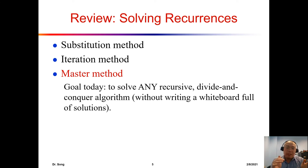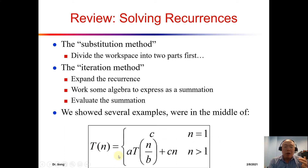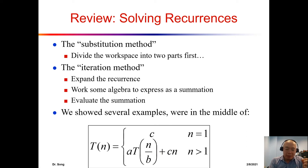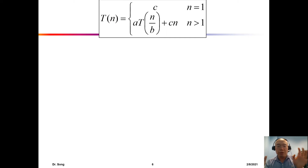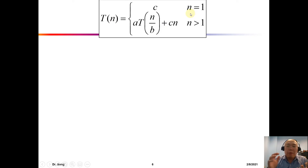Today, when talking about solving recursions, we only discuss divide-and-conquer style: a·T(n/b). For merge sort, a is 2 and b is also 2. If we want to put a recursion into a general form, there are parameters a, b, and c.